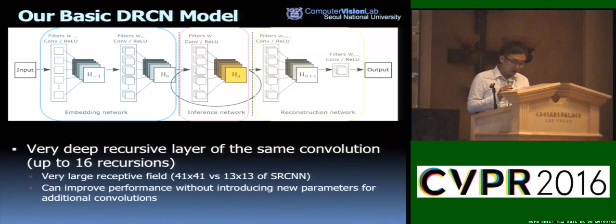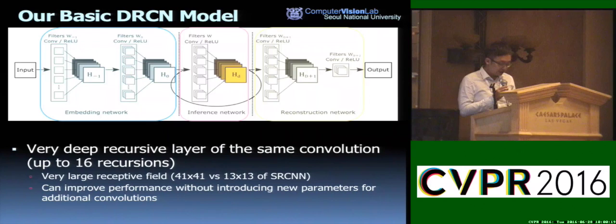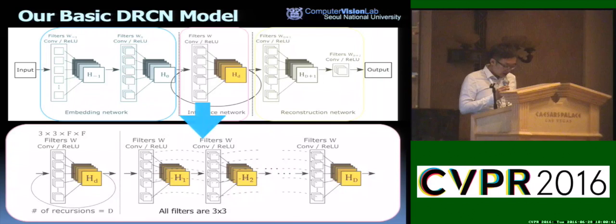Our model consists of three sub-networks: embedding, inference, and reconstruction. The embedding net represents the given image as feature maps ready for inference. The inference net solves the task, and once inference is done, the final feature maps are fed into the reconstruction net to generate the output image. By exploiting recursion, the model uses a very large receptive field and can improve performance without introducing new parameters for more recursions. The inference net is recursively applied up to 16 times.